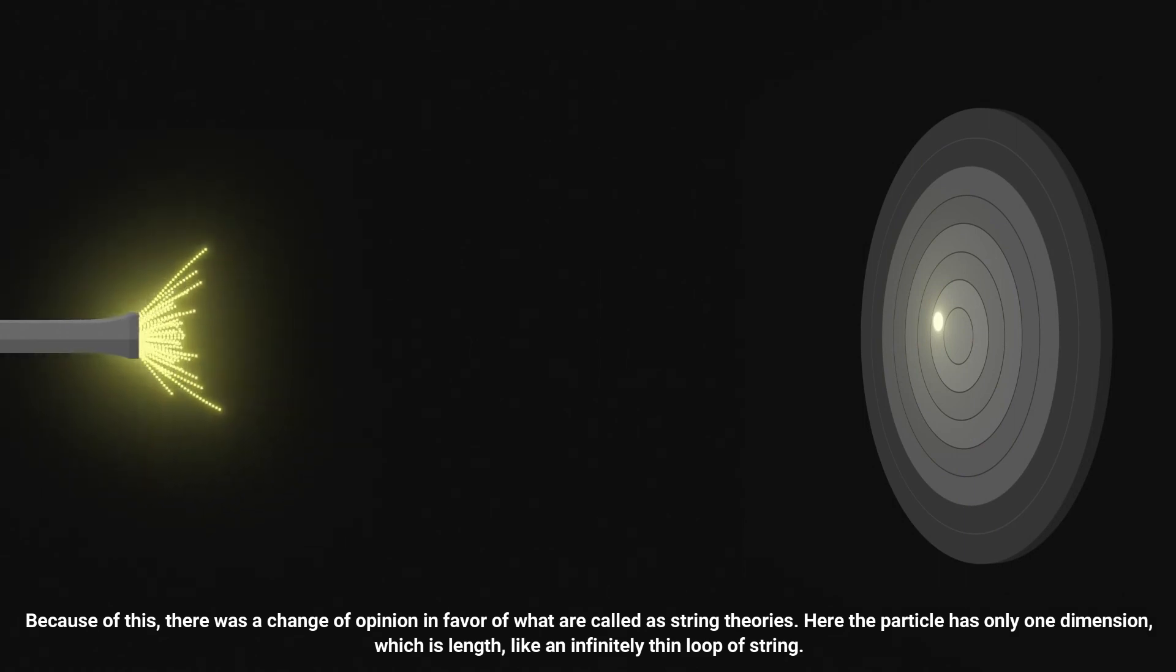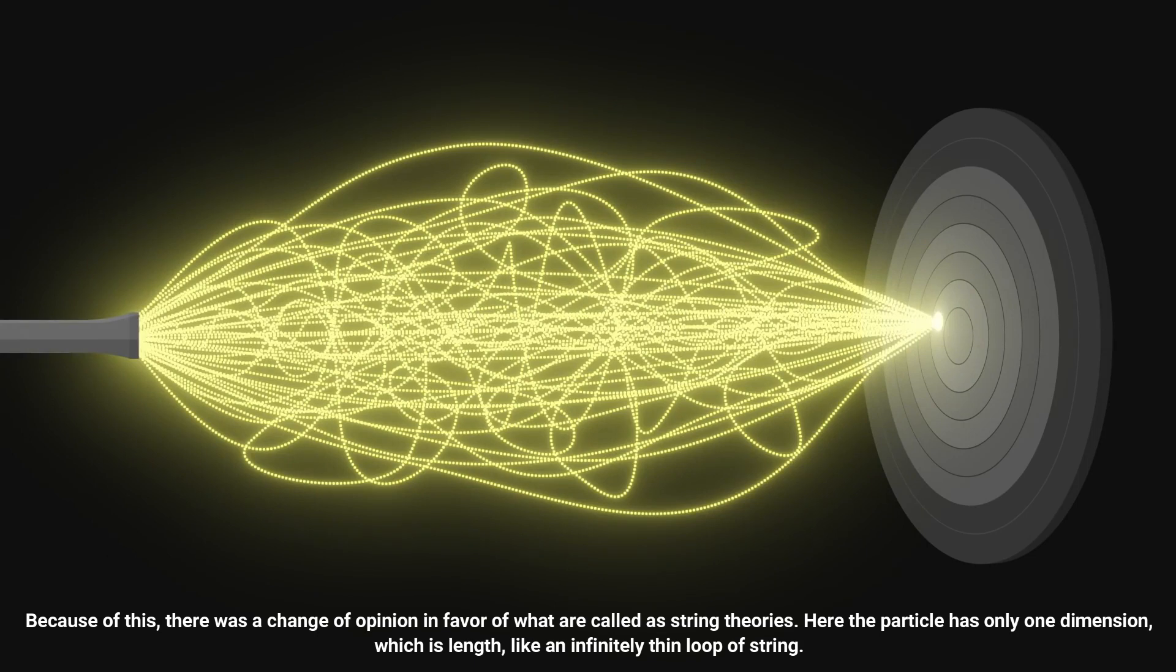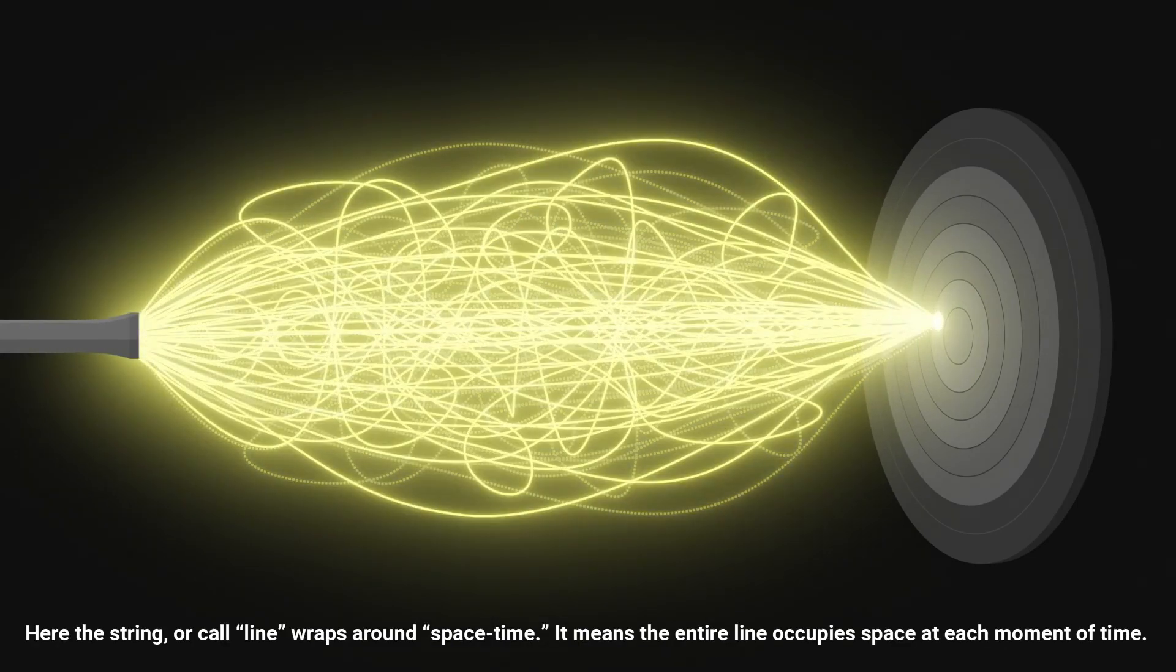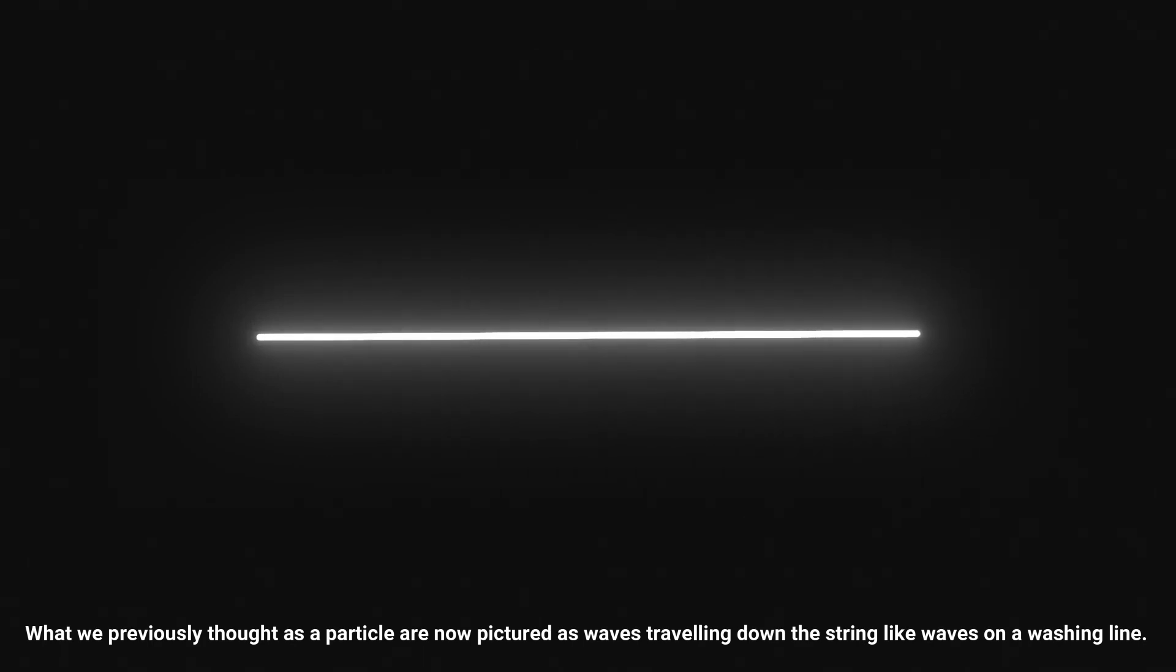Here the particle has only one dimension, which is length, like an infinitely thin loop of string. Here the string, or call it line, wraps around space-time. It means the entire line occupies space at each moment of time. What we previously thought as a particle are now pictured as waves traveling down the string, like waves on a washing line.